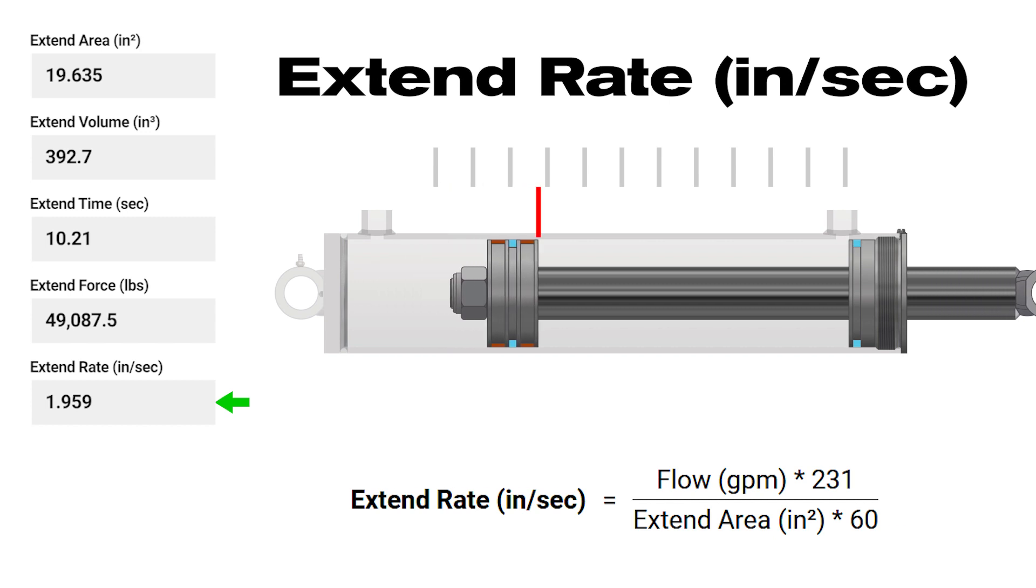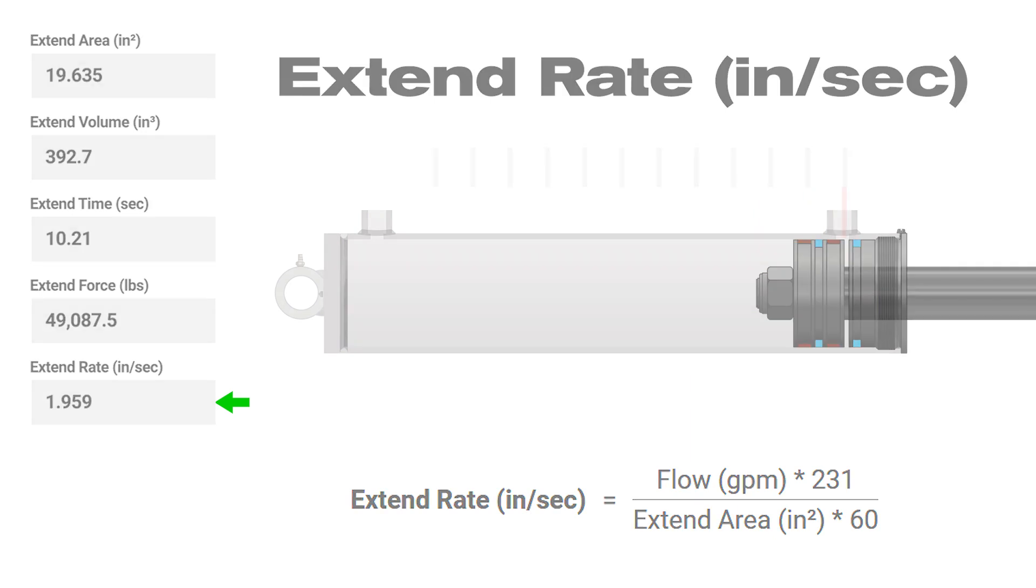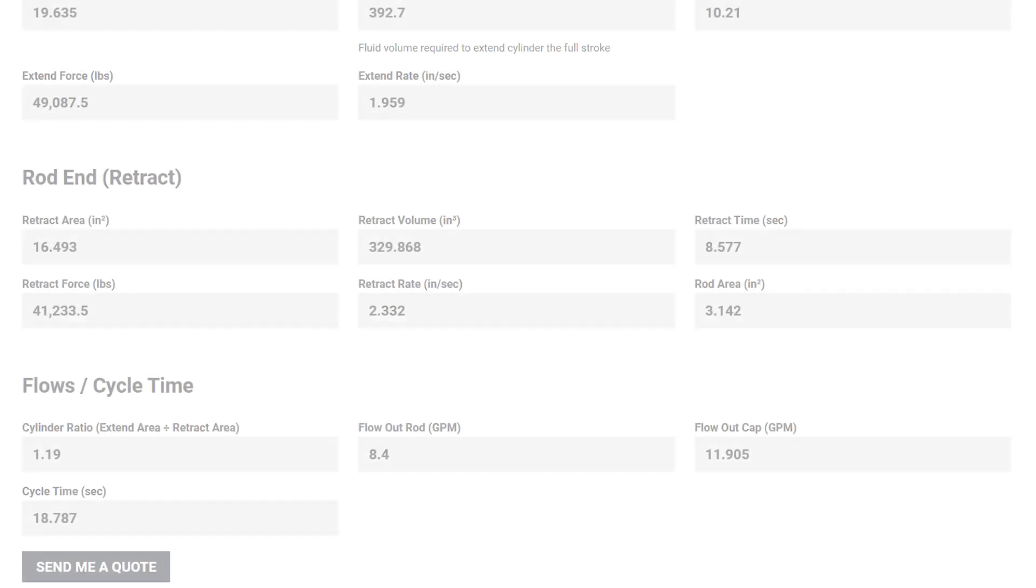Extend rate, measured in inches per second, is the speed at which a cylinder extends toward its full extension length. Now let's look at the rod end calculations.